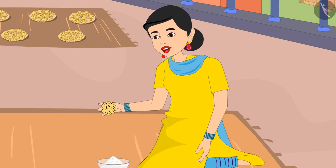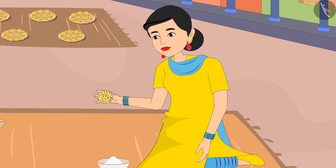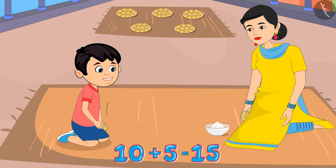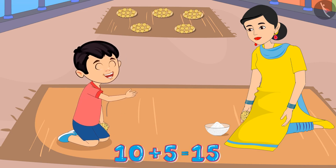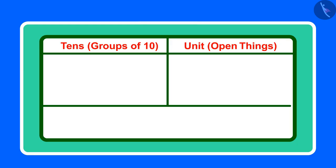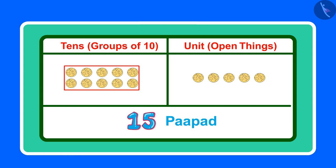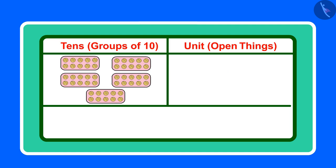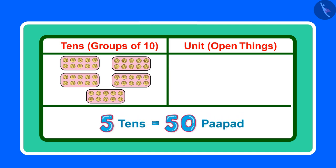Mother explains: If one plate has 10 papad, then how many papad will there be in 5 plates? Chotu says: But mother, if we add 10 papad and 5 plates, then the total will be 15 only, right? Mother responds: Yes, Chotu, you said it right that 15 has one group of 10 and 5 ones. But here there are 5 groups of 10 each, which means 5 times 10 — 5 tens.